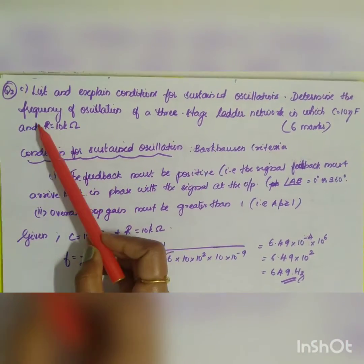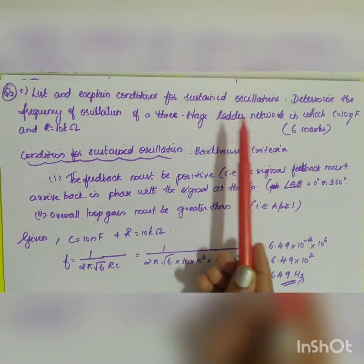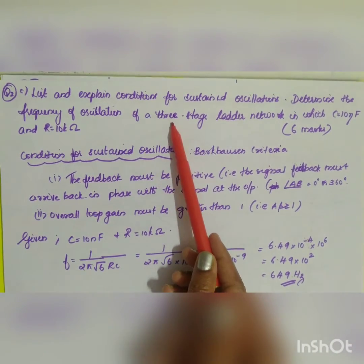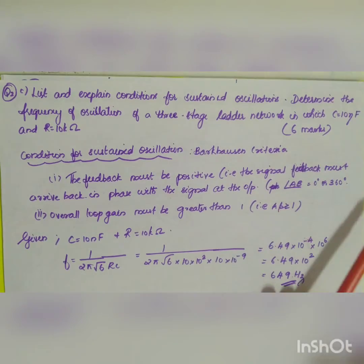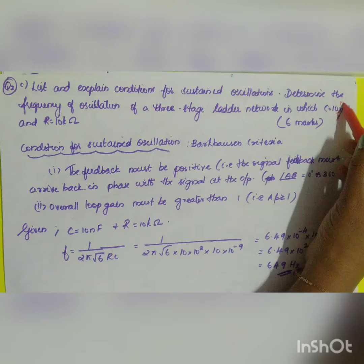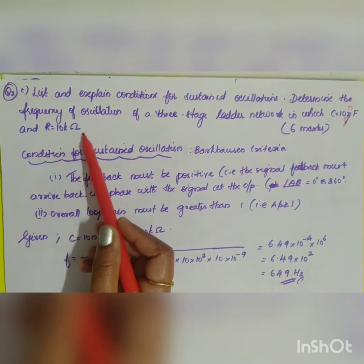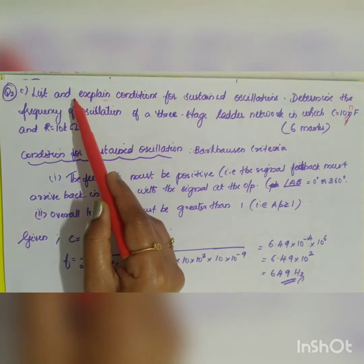The next question is Question 2C: List and explain the conditions for sustained oscillations. Determine the frequency of oscillation of a three-stage ladder network in which C equals 10 nanofarad and R equals 10 kilo-ohms. This is asked for six marks.